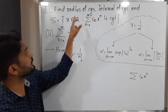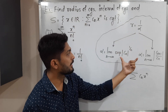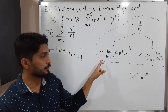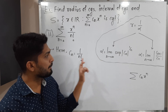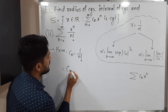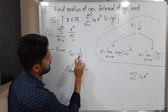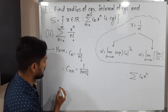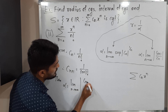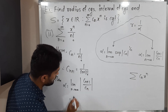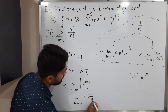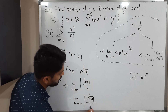We will find the radius of convergence, which is 1 by alpha, so we need alpha first. There is no power n on Cn here, so I will go for the second formula. In the second formula we need Cn+1 as well, which is obtained by replacing n by n+1. So Cn+1 equals 1 upon (n+1) factorial. Then alpha equals limit n tends to infinity mod Cn+1 upon Cn, which is 1 upon (n+1) factorial divided by 1 upon n factorial.